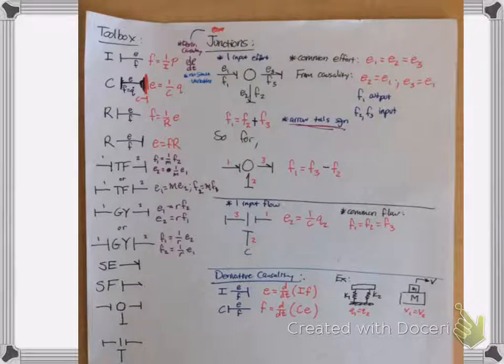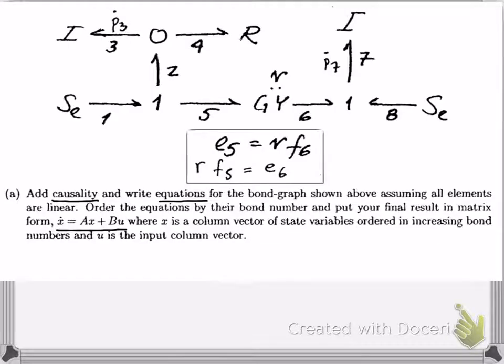Let's start with assigning causality. I'd suggest when doing any of these problems to create your own toolbox. This is one I came up with that shows the causality for inertia, capacitance and resistance components, transformers, gyrators and all that stuff, so you know exactly what to look for in terms of integral causality and the respective equations. First thing, as you already know, when starting a bond graph you use the effort sources or flow sources to assign causality, and those are defined as follows, where the effort is away from the source.